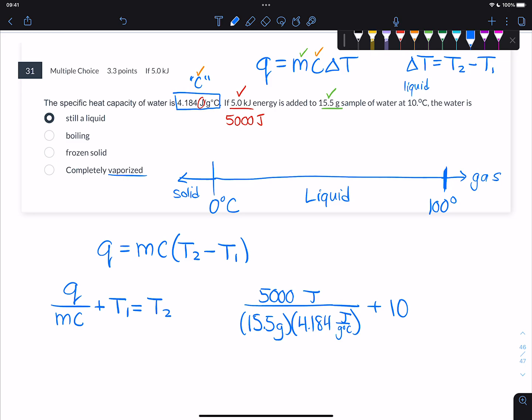We don't need to turn it into Kelvin because we're talking about a difference in temperature. Check out our numbers here. And I'll do it with you because this is a question where you have to do math to see what the answer is, but the answer is qualitative. So we have 5,000 divided by the product of 15.5 and 4.184. Add 10. So my temperature is going to be 87.1.